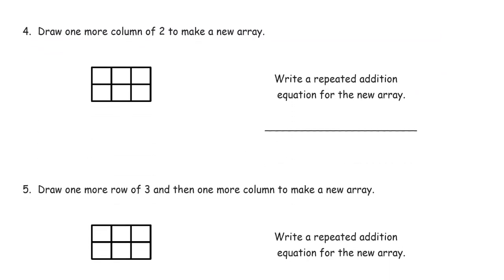Draw one more column of two to make an array. All right, so I need another column, not another row. There. Repeated addition equation for the new array. Well, since I added a column, I'm going to write repeated addition that adds columns instead of rows. Because you could have two fours, and that would be the rows. But since it told me that I'm thinking column, because it asked for a new column, so I'm going to write four twos.